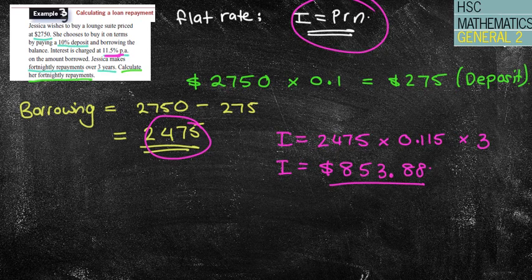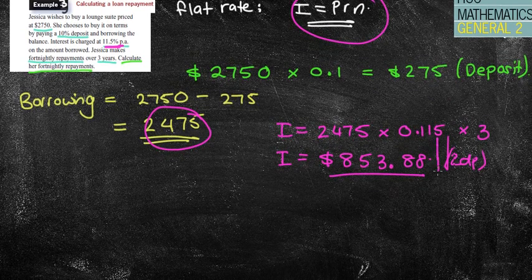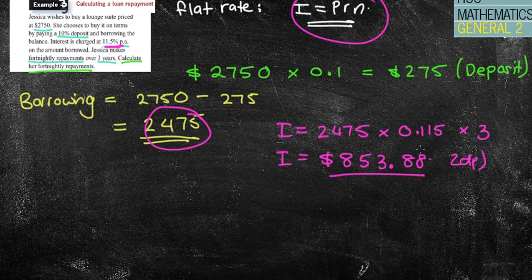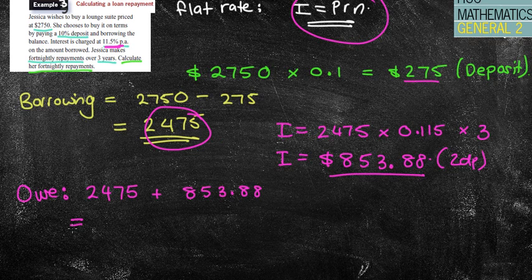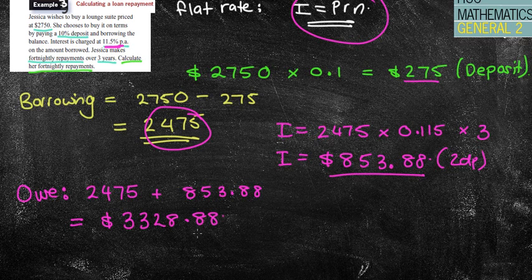Now, remember, it's always two decimal places with money at all times. Okay. All right. So how much do I owe? Well, we borrowed the $2,475, which was the cost of the suite, less the deposit. And I'm being charged $853.88 because that was my interest that I was charged for actually borrowing that amount. So we actually owe them in total $3,328.88. Now, that might be the answer if that's what the question asked. I'm going to come back to my question, which was in green to say, okay, well, that's how much I owe. Is that what they have asked for the total amount? No, they haven't. It says calculate her fortnightly repayments.